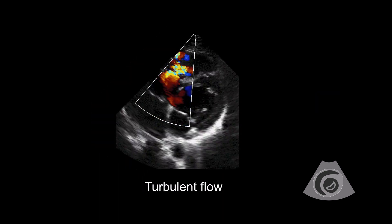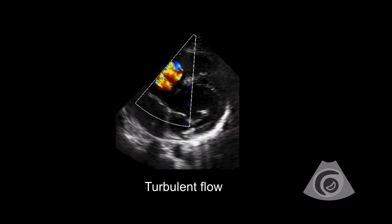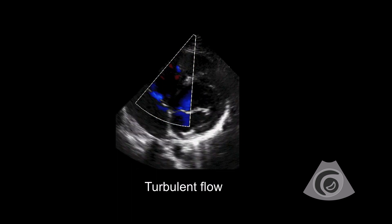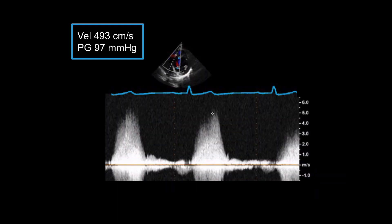Now we can see turbulent flow at the site of the muscle bundles. Let's take a look at the gradient — whoa, that's a high gradient. There is a danger here that if this gradient gets higher, such as with exercise, it will cause the high pressure chamber to reach systemic pressures and the flow of the ventricular septal defect will reverse, which means the flow will go from right to left causing cyanosis, and warranting surgery to resect the muscle bundles and close the ventricular septal defect.